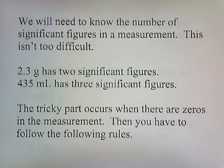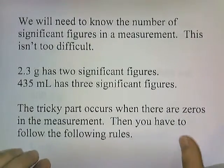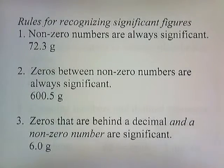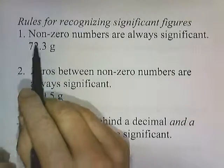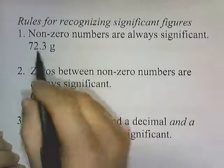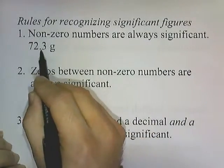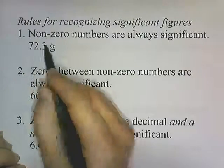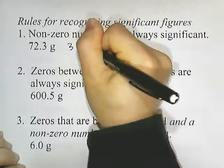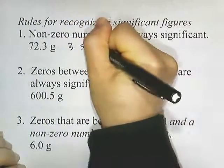The tricky part comes when there are zeros in the measurement, and then you have to follow the following rules. Non-zero numbers are always significant. 72.3 grams has three significant figures.